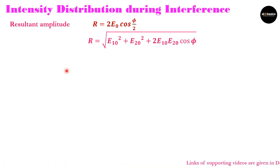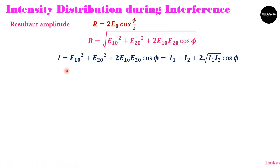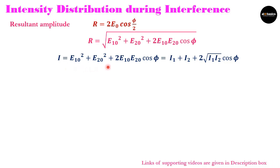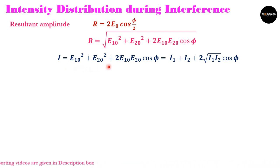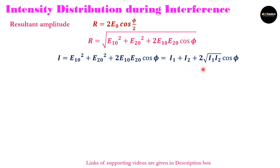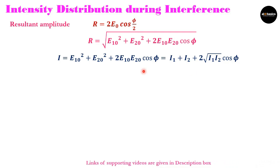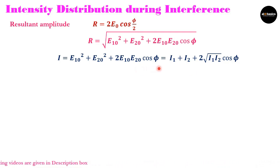Once we know the amplitude, we can find intensity. The intensity of the resultant wave is given by I = E10² + E20² + 2·E10·E20·cos φ, where E10² and E20² represent intensities I1 and I2 of the two interfering waves. This can be written as I = I1 + I2 + 2√(I1·I2) cos φ.